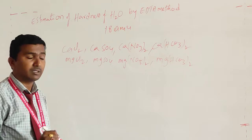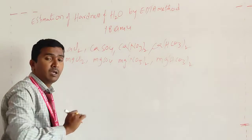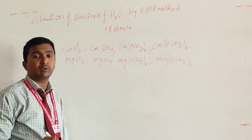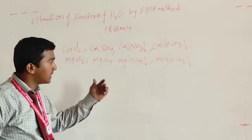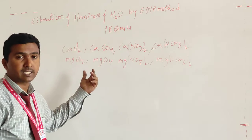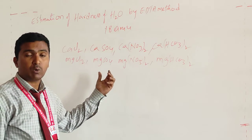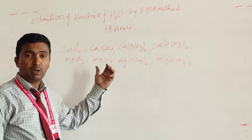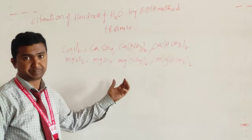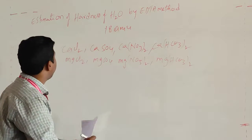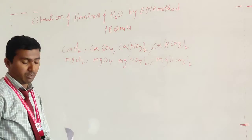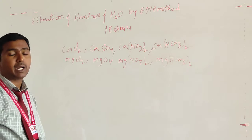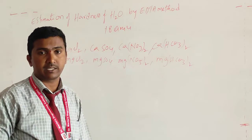In the presence of these hardness-causing salts, when soap dissolves in water, the water does not give any lather and does not form any precipitate or layer. That is the hardness of water. But how do we measure the hardness of water?